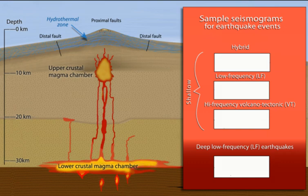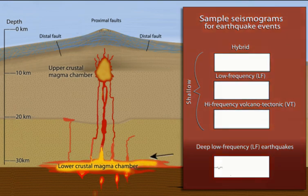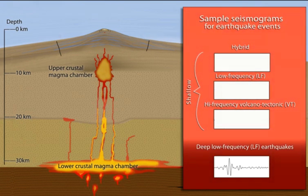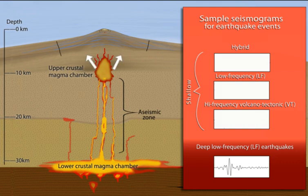Different seismic signatures will reflect varying geologic processes. Sample seismograms include deep, low-frequency earthquakes and/or tremor that occur as magma formed in the lower crust rises into conduits. These deep events can only be detected by sensitive seismometers. An aseismic zone separates the deep and shallow earthquakes.